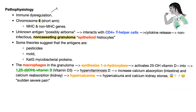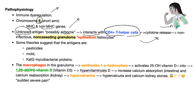Pathophysiology: immune dysregulation. The problem could be in chromosome 6 involving MHC and non-MHC genes. There is an unknown antigen that, for some unknown reason, starts to interact with CD4-positive T helper cells. This antigen is possibly airborne — that's why the lungs are always involved. CD4 T helper cells release cytokines to communicate with other white blood cells, leading to formation of non-caseating granuloma. The main cell here is the epithelioid histiocyte, which is a macrophage. Some theories suggest this unknown antigen could be a pesticide, mold, or cat-scratch mycobacterial protein.